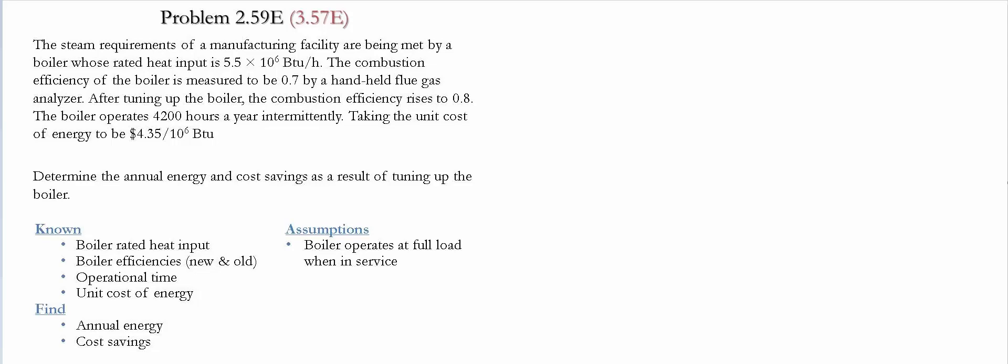The combustion efficiency of the boiler is measured to be 0.7 by a handheld fuel gas analyzer. After tuning up the boiler, the combustion efficiency was raised to 0.8. The boiler operates for 4,200 hours in a year. Taking the unit cost of energy to be $4.35 per 10 to the 6 BTU,